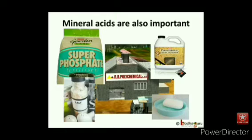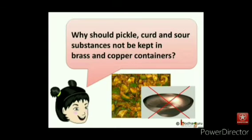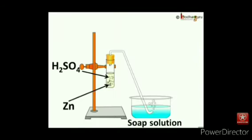All these uses are possible because of a few basic properties of acids and bases. So let us know a few of them. Why should pickles, curd, and sour substances not be kept in brass and copper containers? Let us find it out. What would happen if we drop a piece of metal in acid? We take a little sulfuric acid in a test tube and add a few pieces of zinc to it. A colourless, odourless gas would be produced.